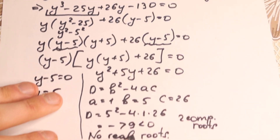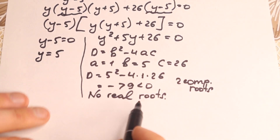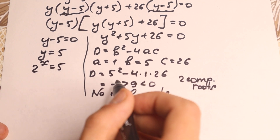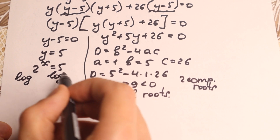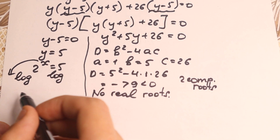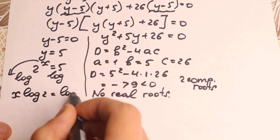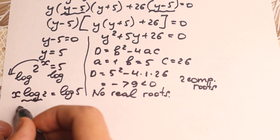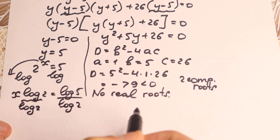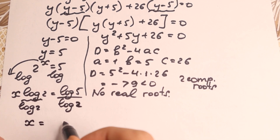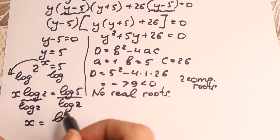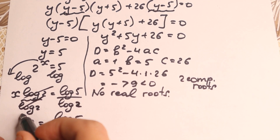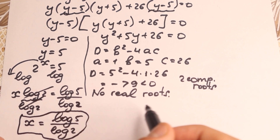Going back to our substitution, 2 to the power x equal to y, so 2 to the power x equal to 5. To solve this, let's take log on both sides. The exponent x comes down as a power: x times log 2 equal to log 5. Dividing both sides by log 2, we get x equal to log 5 over log 2. This is our answer — no integer root, but a fraction.